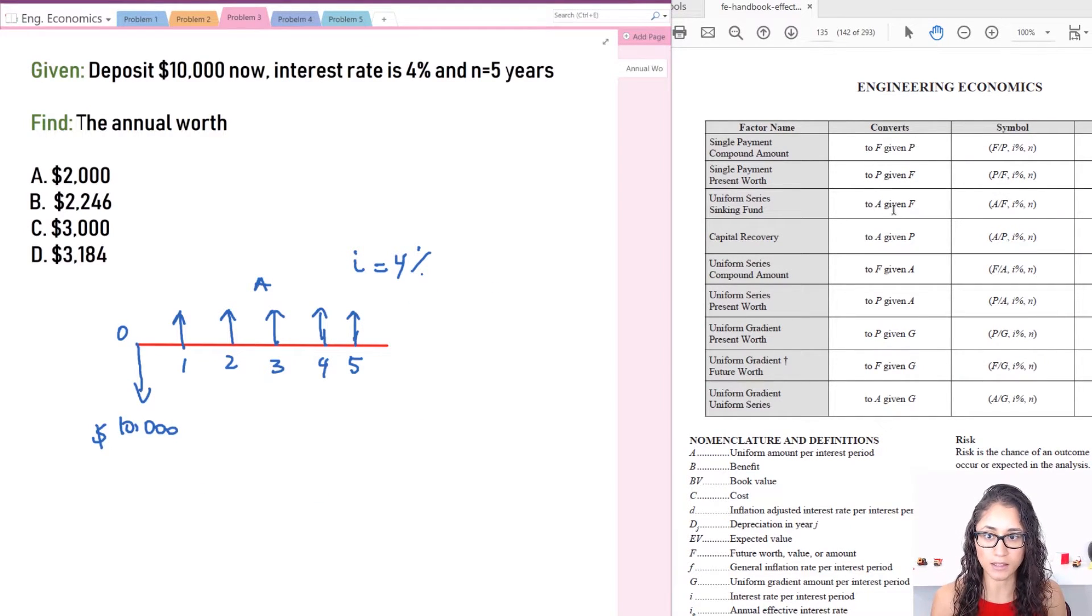Now we want to convert to A and we're given the present worth. So this is your P. Let me write it down. This is P.